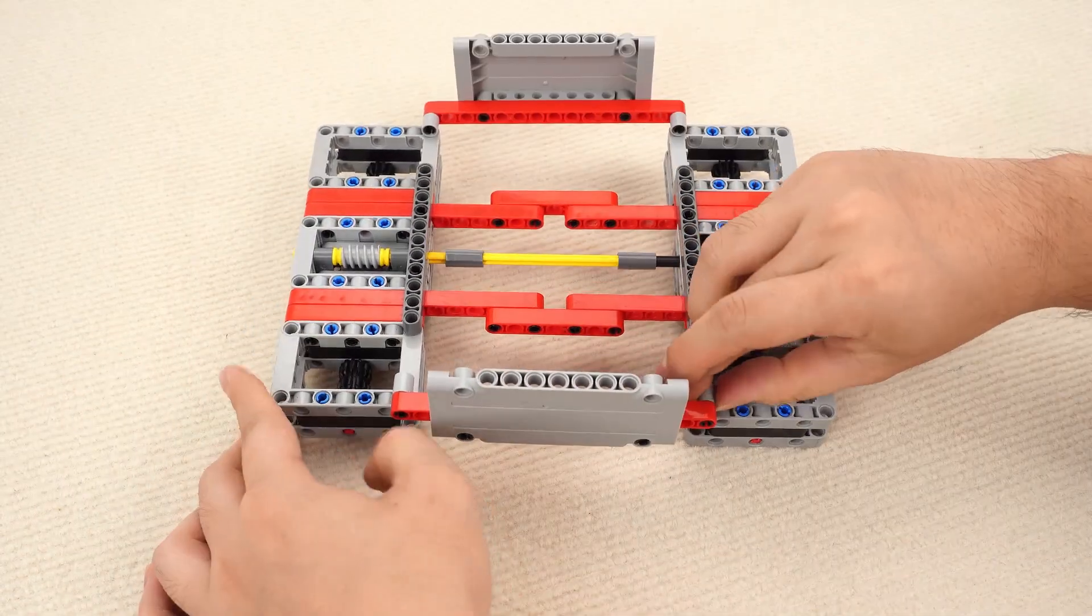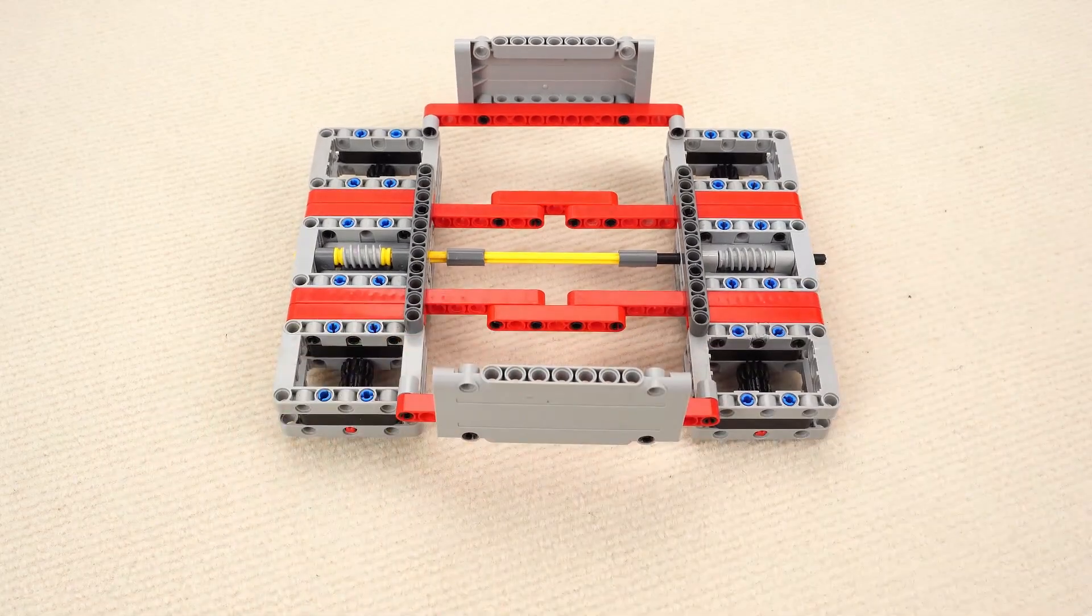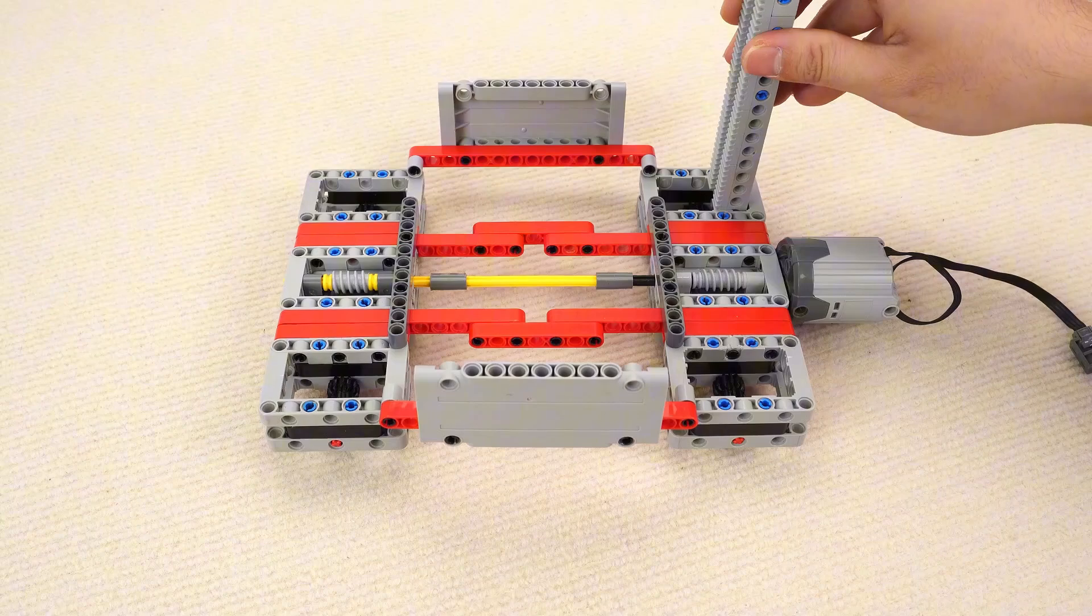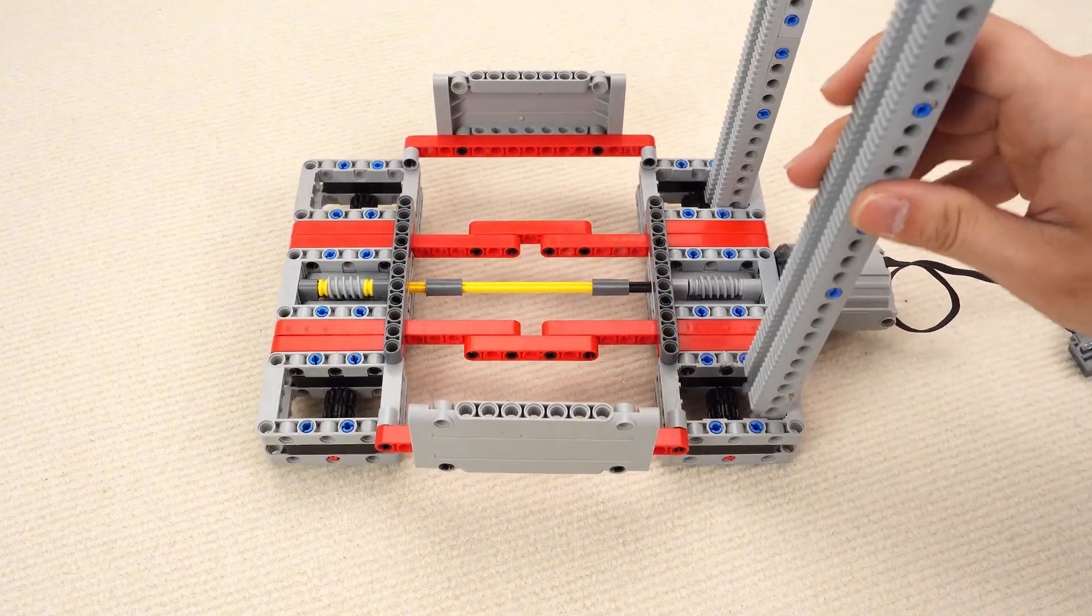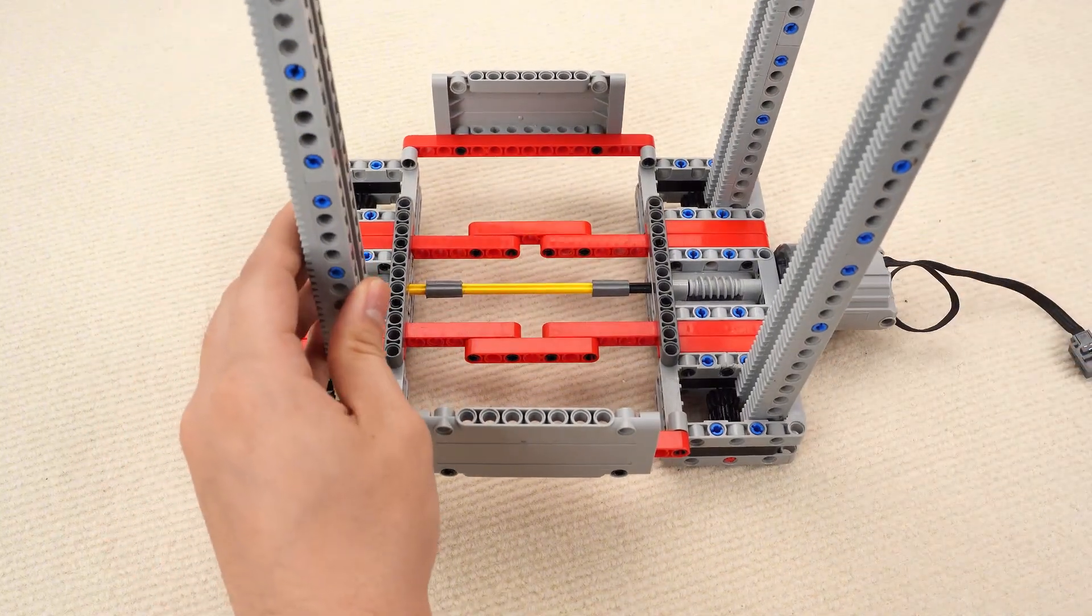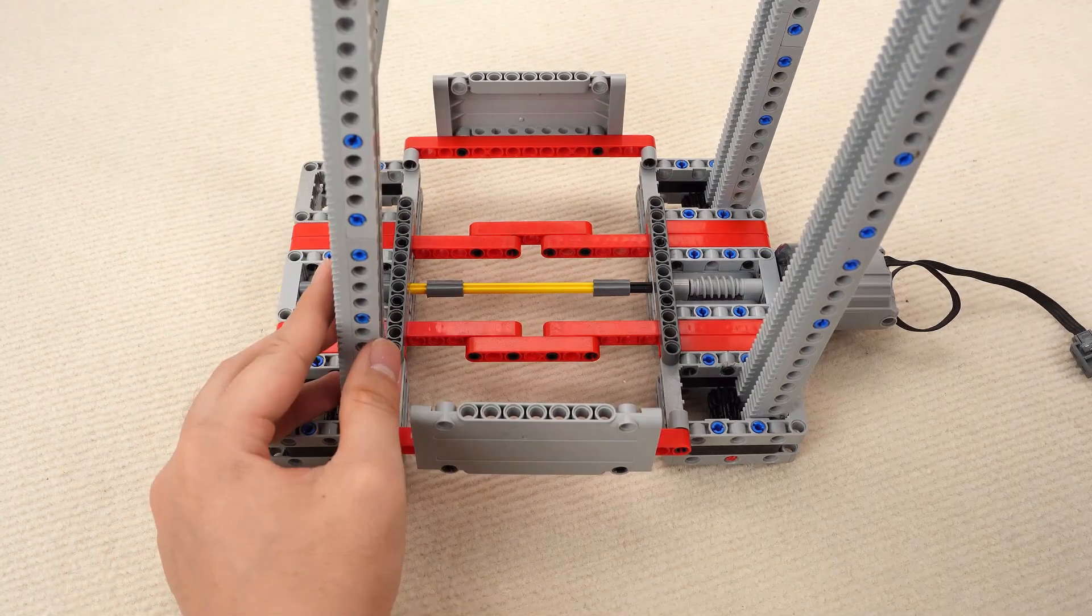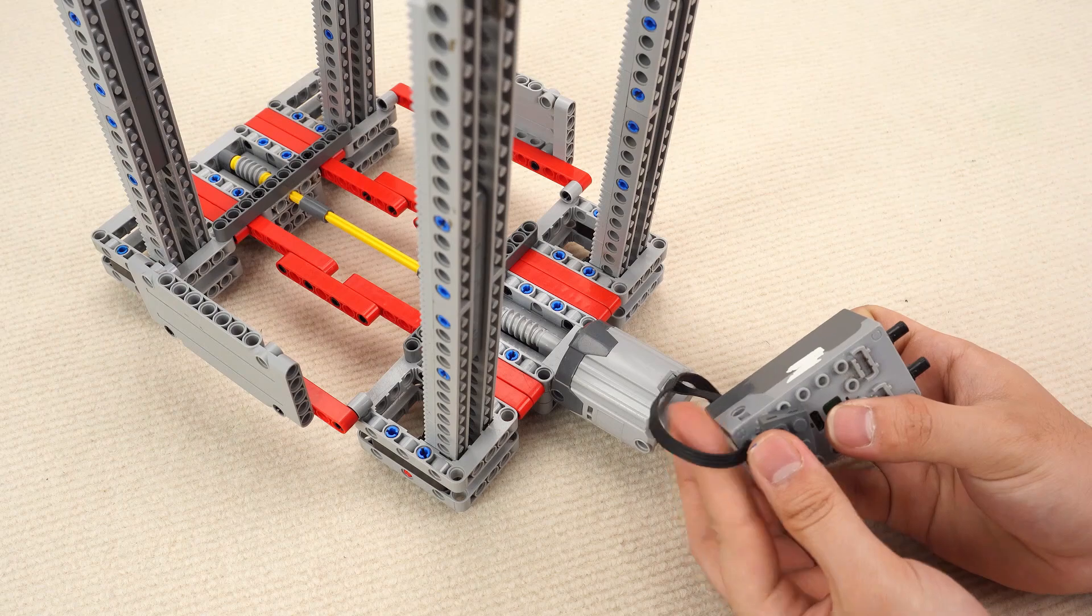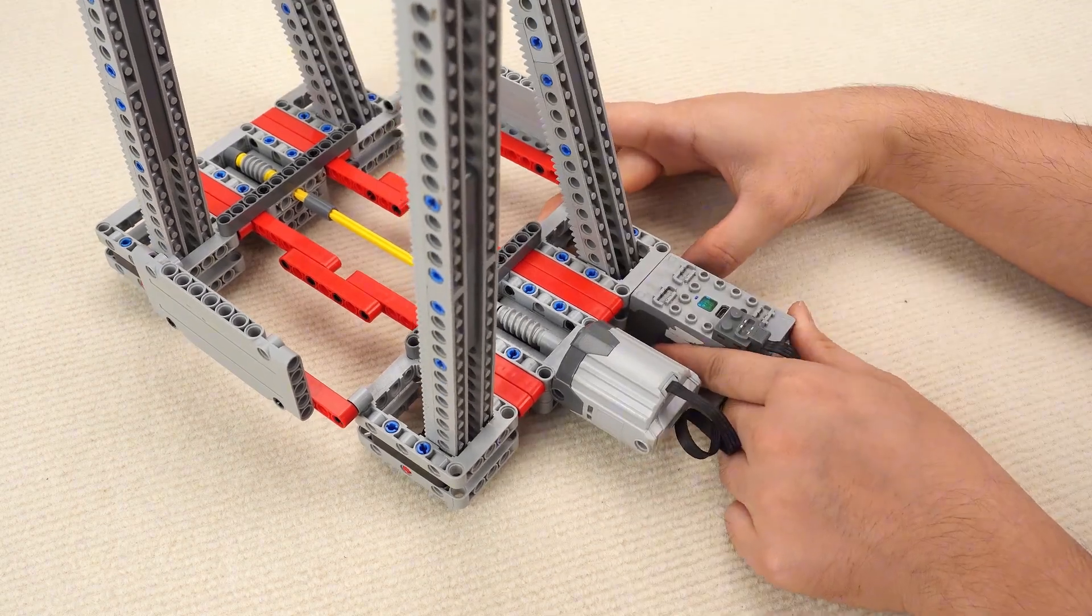Next, two Technic panels to keep the water jug from sliding off. Then, the motor. After that, connect the four lift columns to the platform. Finally, the control unit.